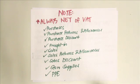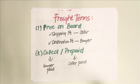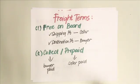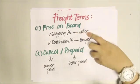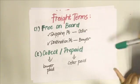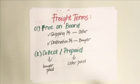The last topic is freight. There are two main terms: free on board (FOB) and collect or prepaid. FOB refers to who will shoulder the freight cost. If it's FOB shipping point, the buyer shoulders the cost since the seller is free of the responsibility to pay freight. If it's FOB destination point, the buyer is free of the obligation to pay freight, meaning the seller carries the liability for freight costs.